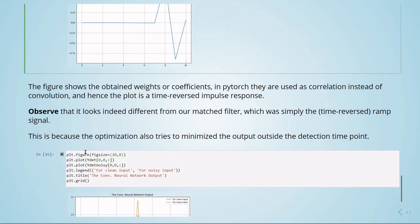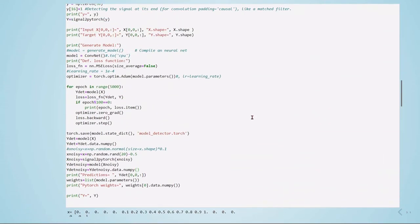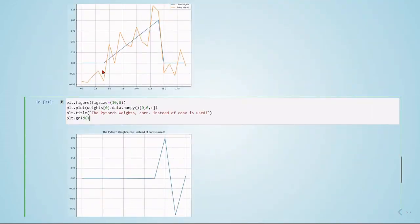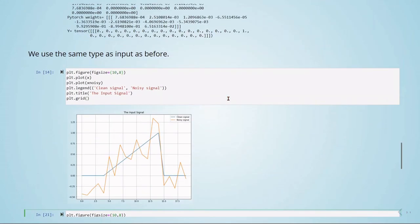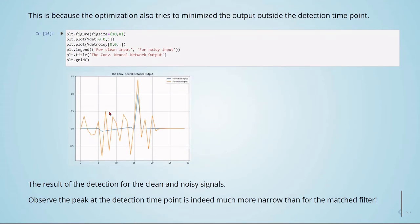The matched filter was simply the time-reversed ramp signal. So now when we input clean input, the peaks here in blue, we have the output of our filter, this peak here. If we use a noisy signal, the output of our filter in here, in orange. So the result of the detection, clean and noisy signals. Observe the peak at the detection point is indeed much more narrow than when we used the matched filter.